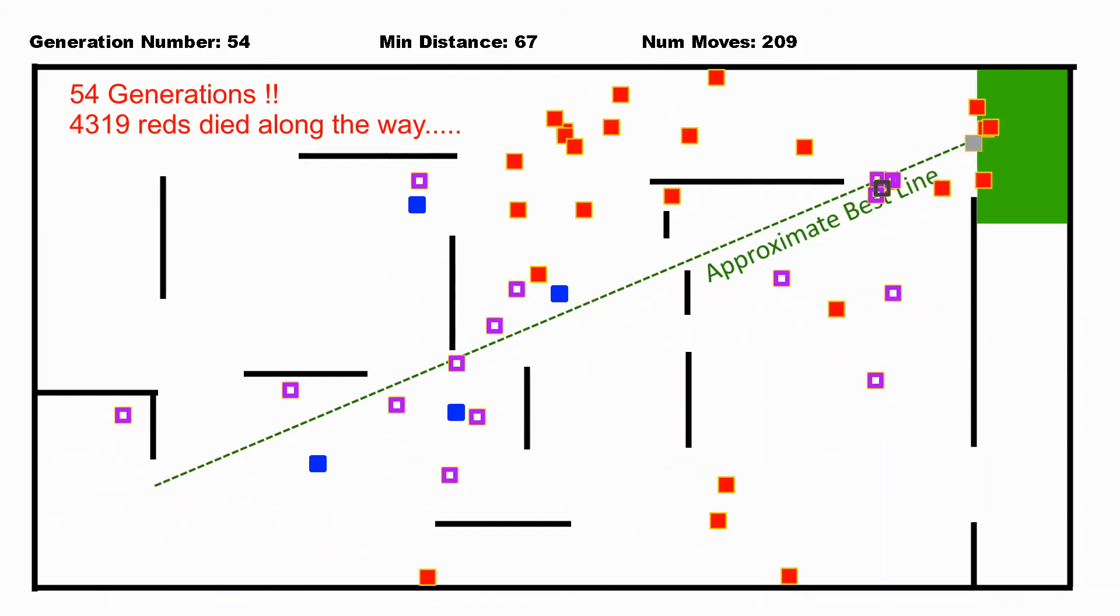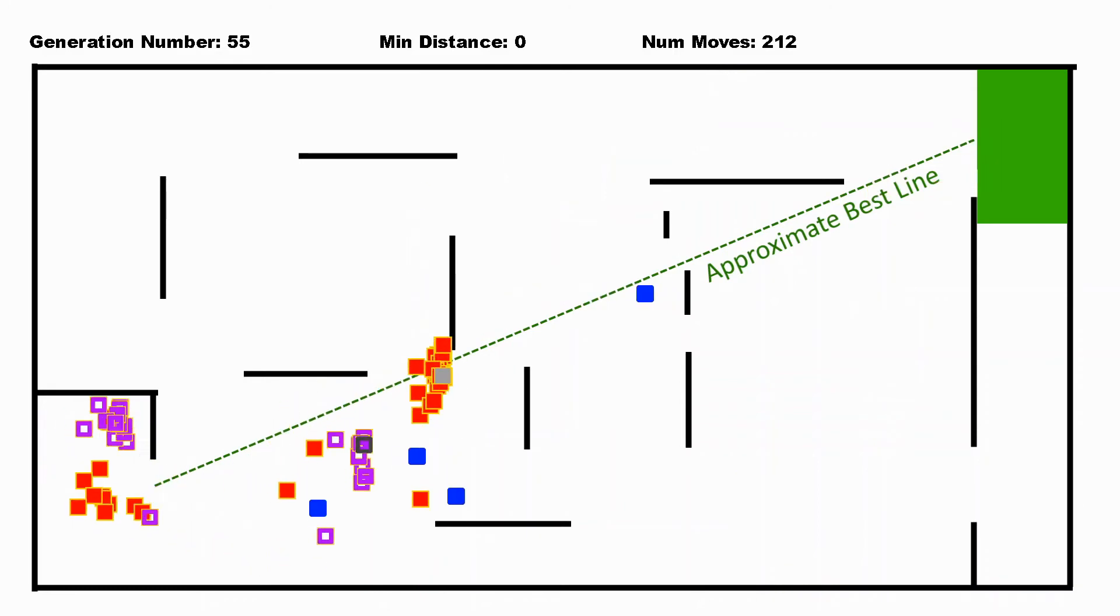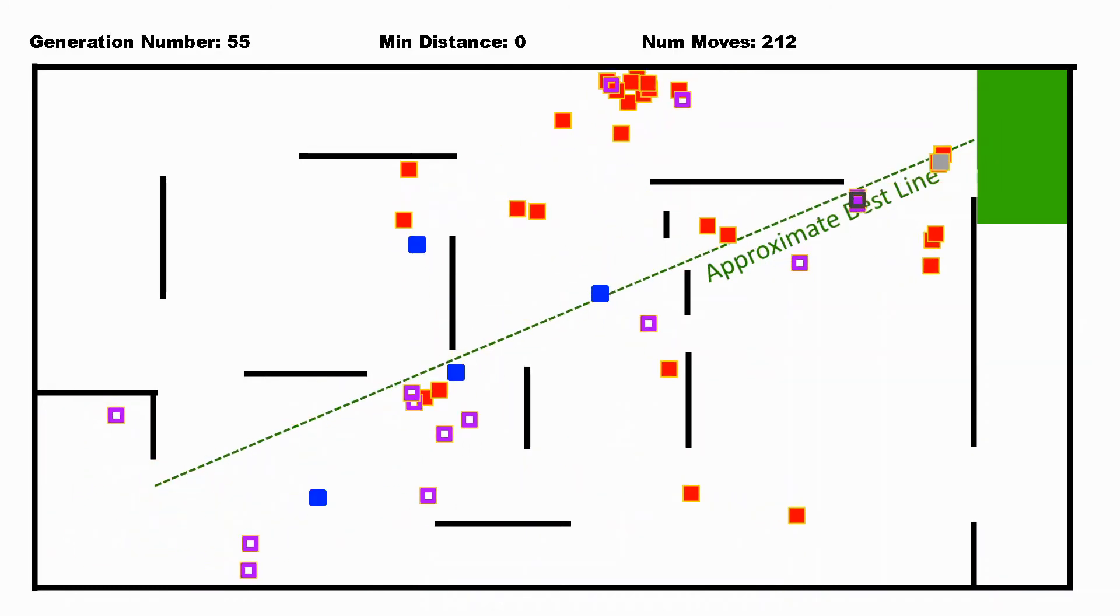Yeah, and here red made it all the way to the end. Purple's still a little bit left to go. It took red 209 moves to make it. Purple will probably make it in the next couple of turns.